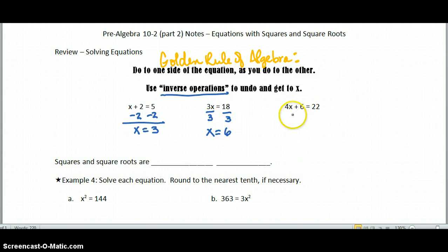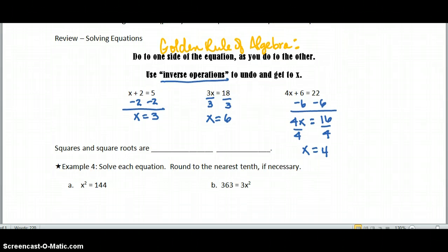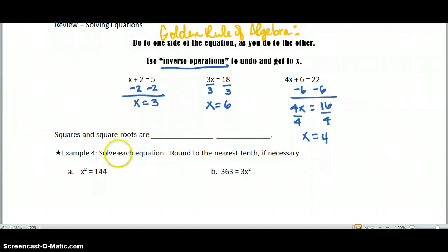We're going to use inverse operations to undo what's being done to x. So our first review problem is x plus 2 equals 5, so it's adding to x. So to undo addition, you subtract 2, and x equals 3. Here, x is being multiplied times 3, so to undo multiplication, you'll divide by 3, and x equals 6. And here, we have a two-step equation. So first, we have to take care of isolating our x term. So we subtract 6 from both sides, and we get 4x equals 16. Divide now to undo the multiplication. So that's 4x equals 16. Divide by 4, and x equals 4.